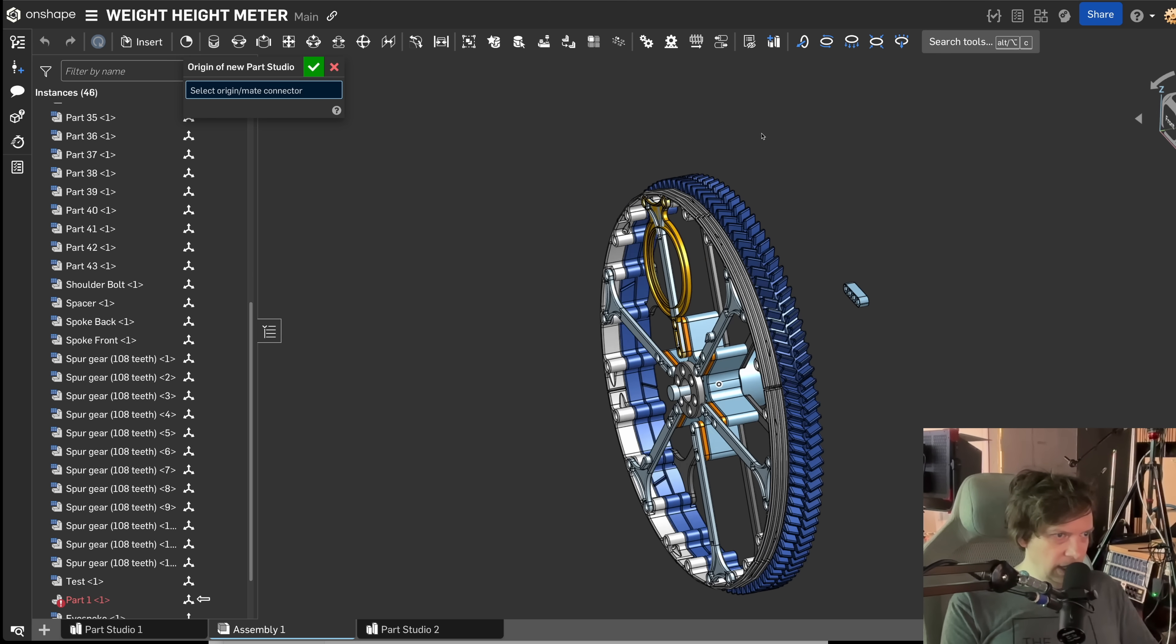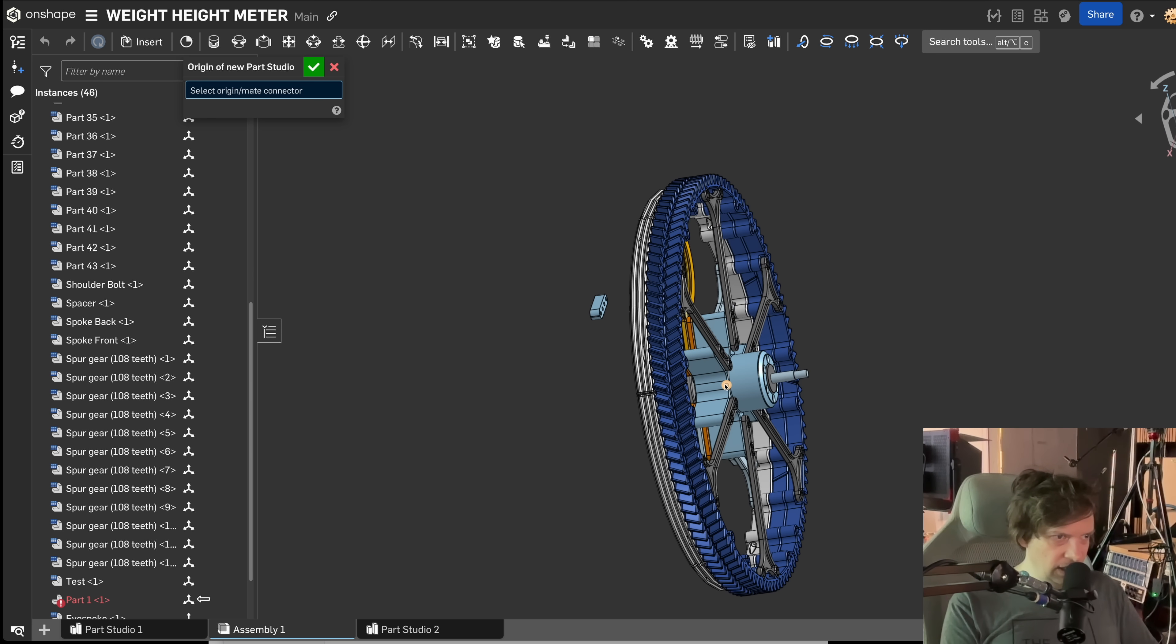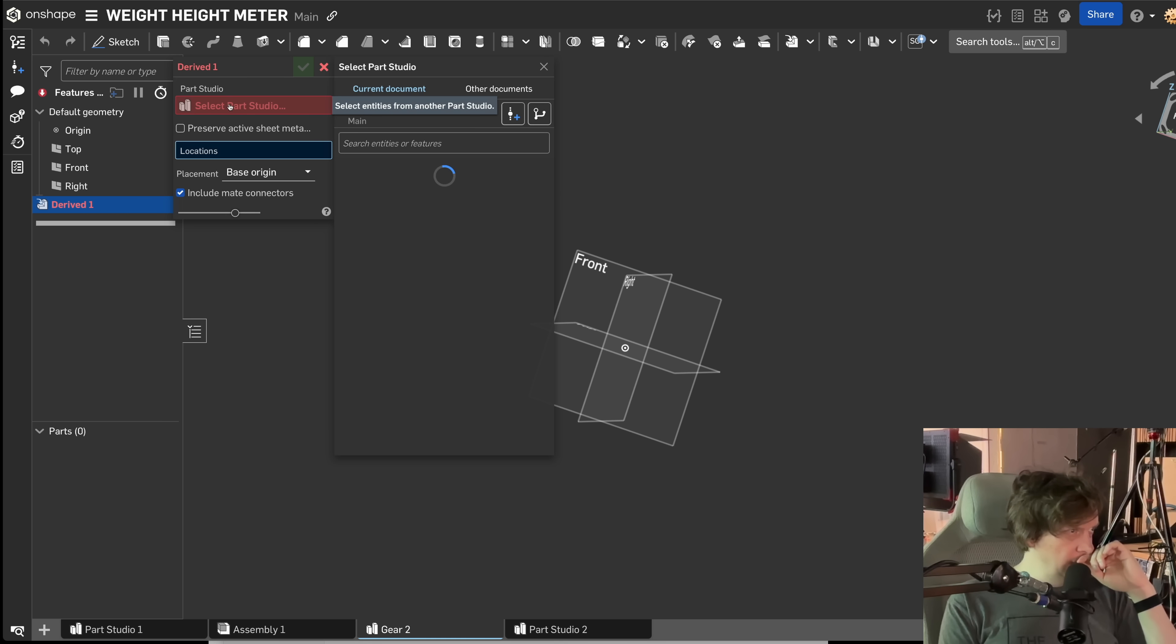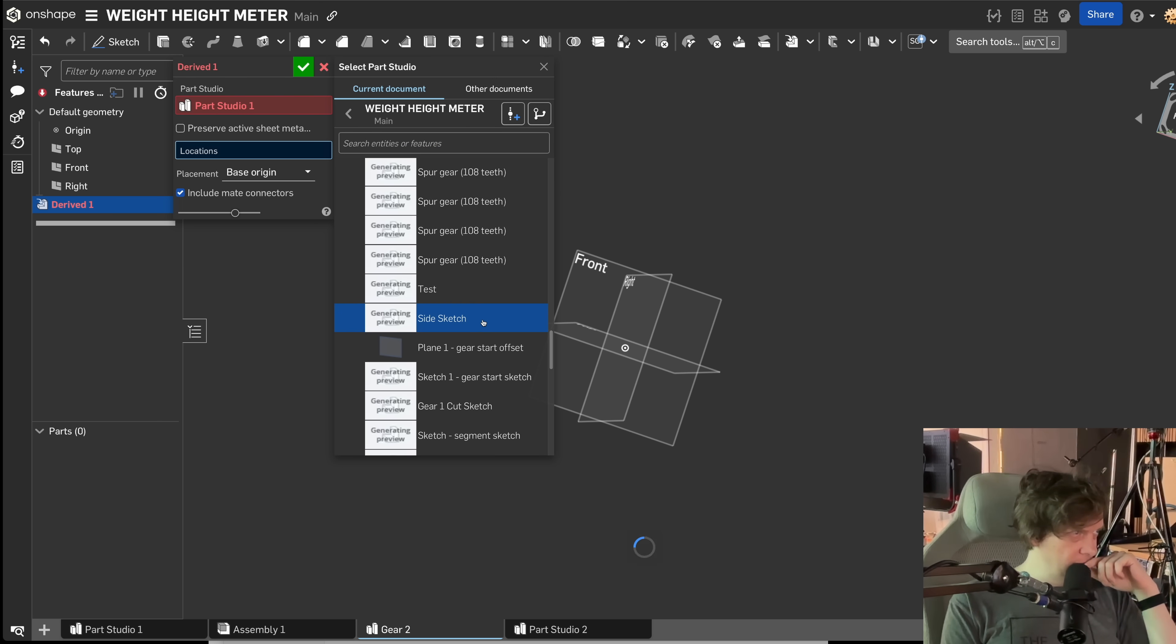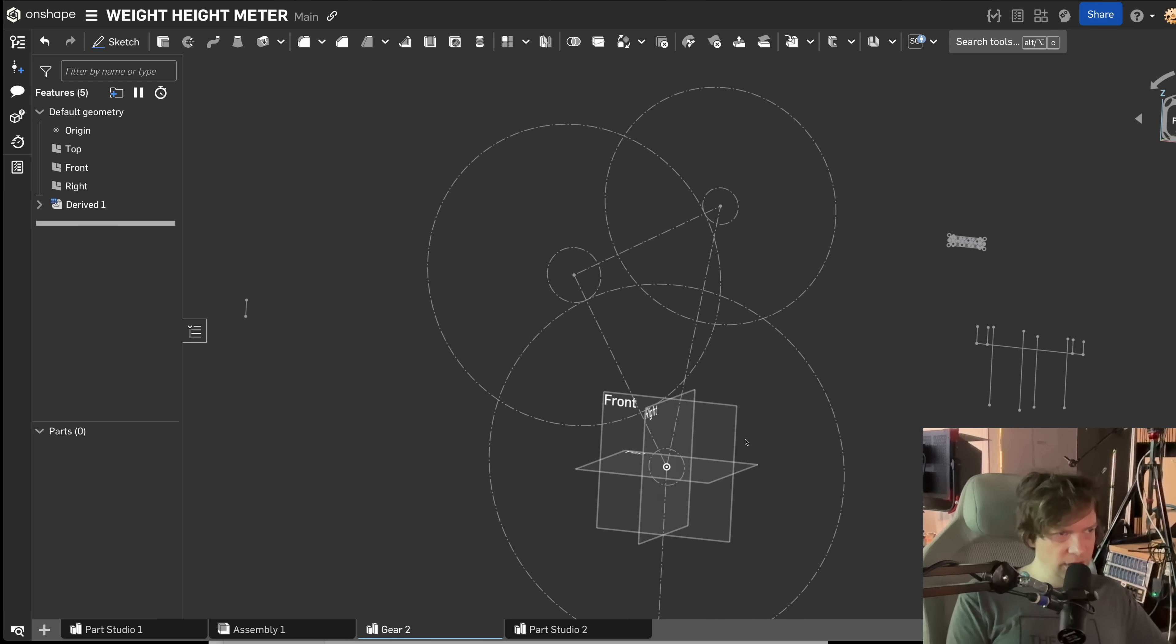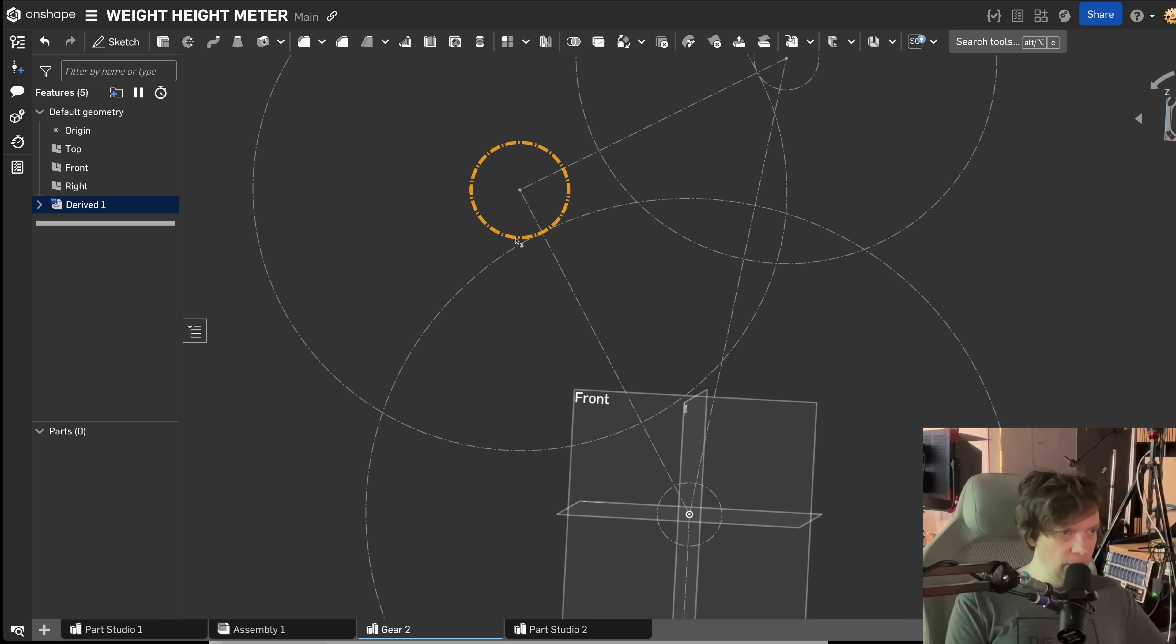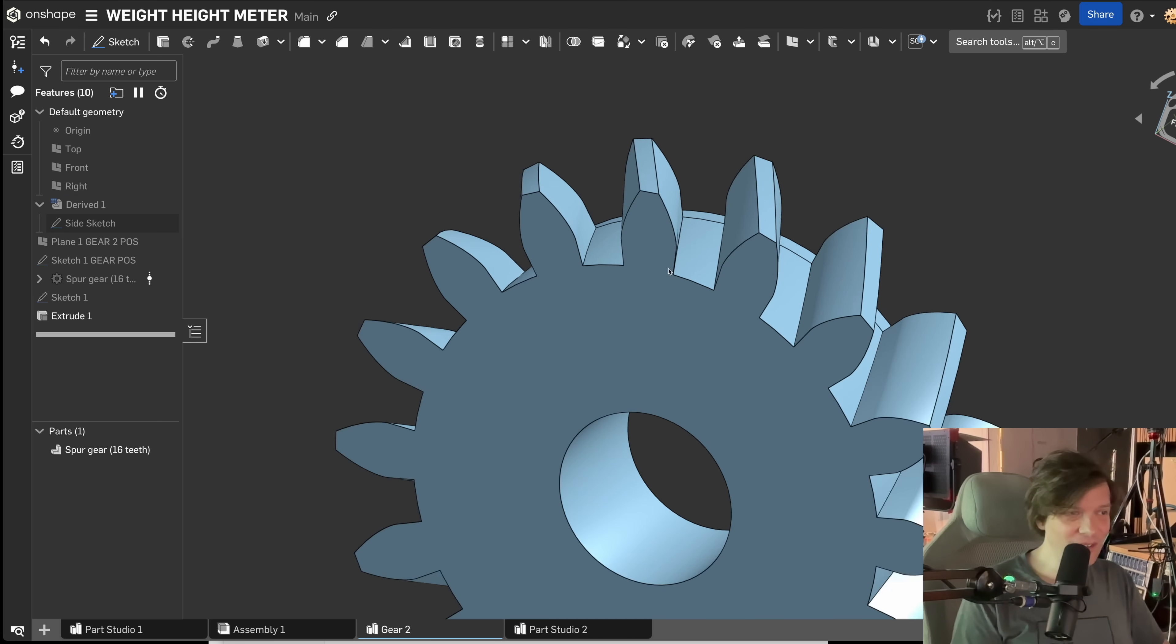Select origin and I want the same origin. So let's see gear 2. So now I want to derive the master sketch from parts studio 1. I'm gonna select parts studio 1 and I want to derive the side sketch. Because this is the skeleton for our design and this is the pivot for the new gear we're making. Let me show you a nice Onshape thing.